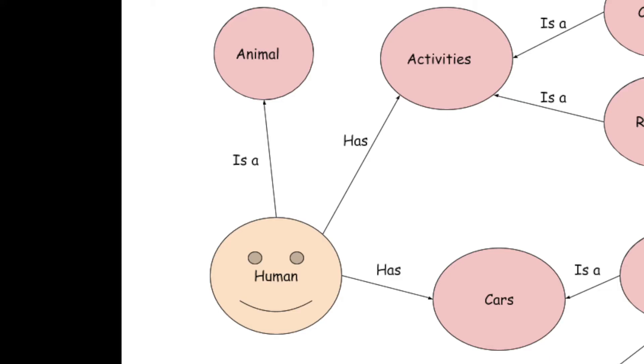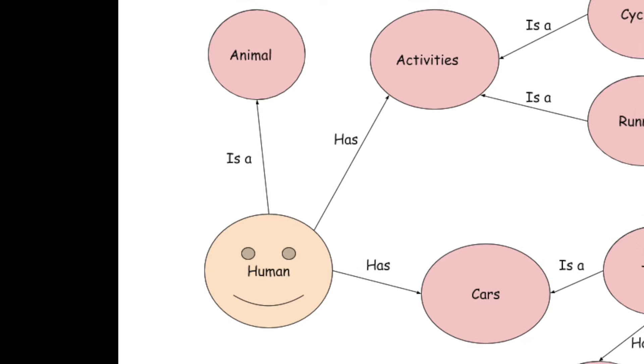Then you can have a human node also connected to activities because humans do activities. You could also have, in the same graph, a relationship between a human and a car.